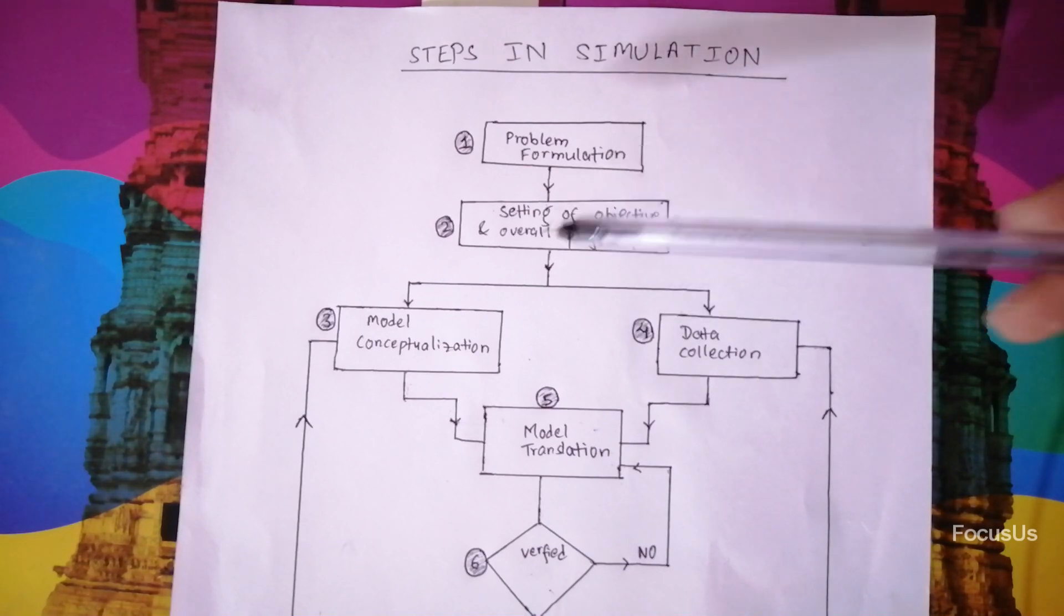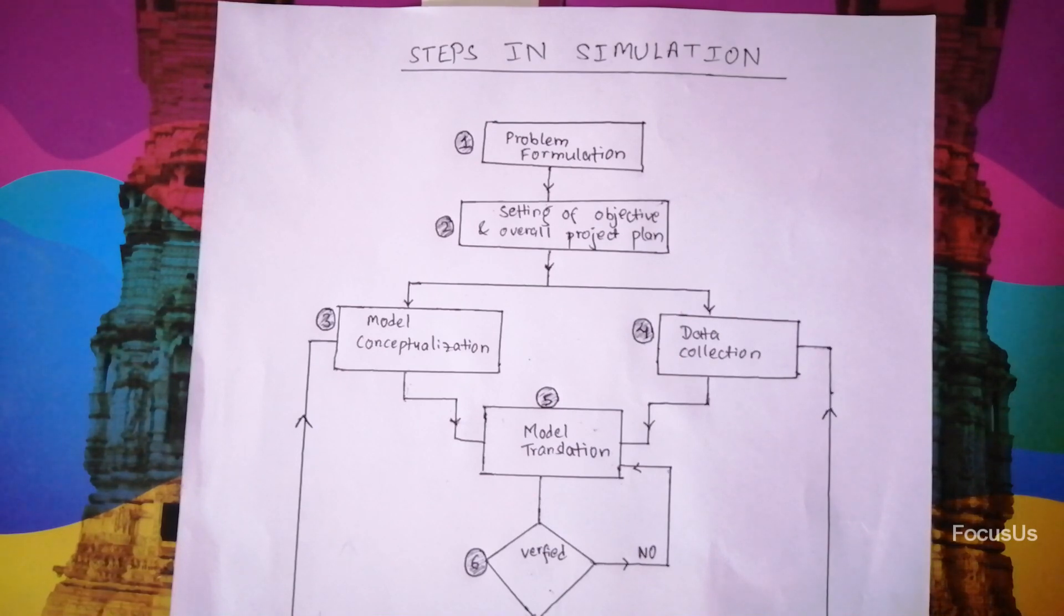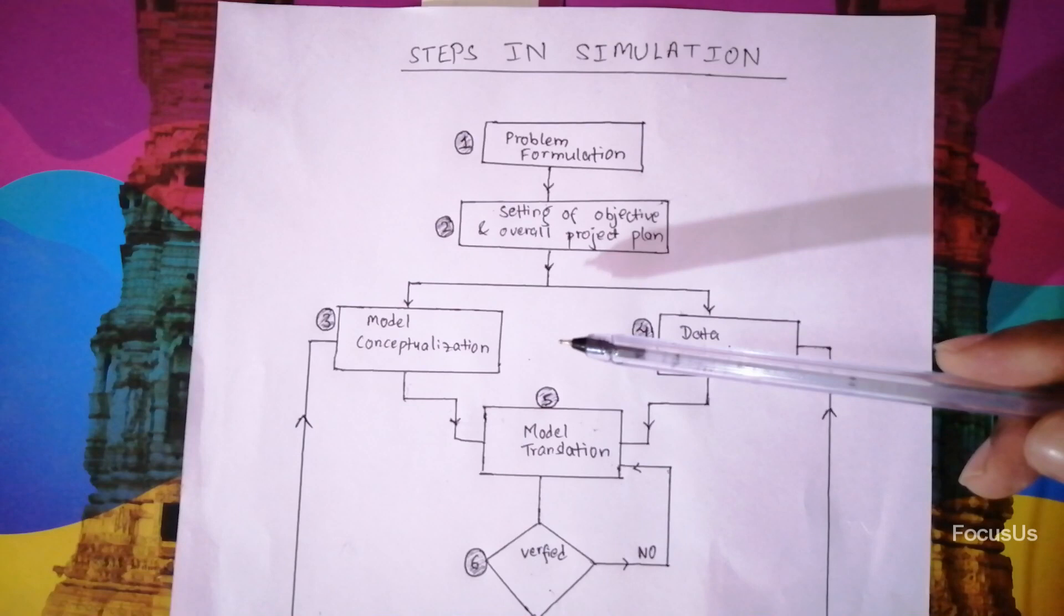After point two we have point three and four which is model conceptualization and data collection. These two processes can go simultaneously side by side because it reduces the overall time consumed to simulate our system, or you can do one after another. But mostly it's done simultaneously to reduce the time. In model conceptualization, it basically means how our model is going to look like. The model is visualized and constructed in this step. It's probably as much of art as science.